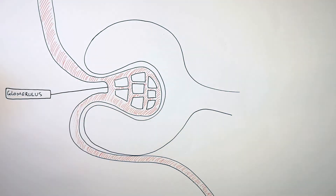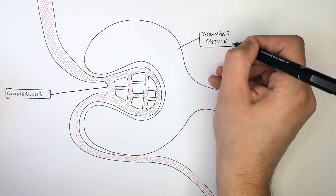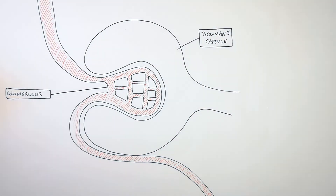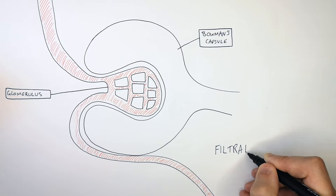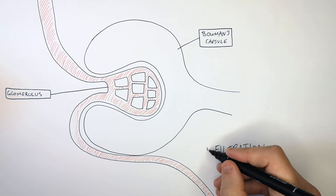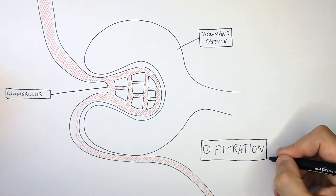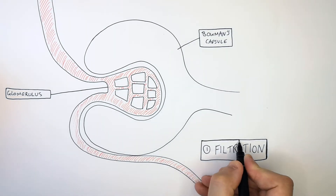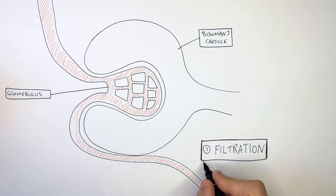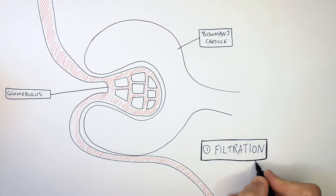The glomerulus is a series of capillaries that surround the Bowman's capsule, and it is this part of the nephron where filtration occurs. The process of filtration occurs between the glomerulus and the Bowman's capsule.